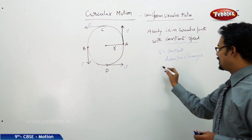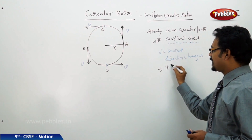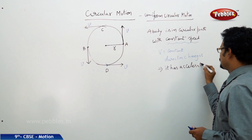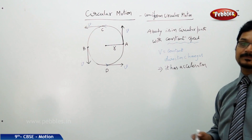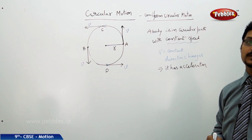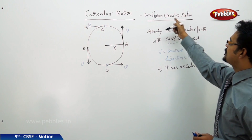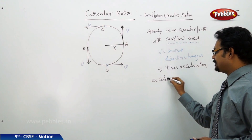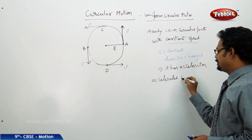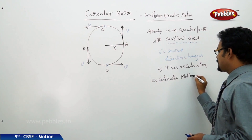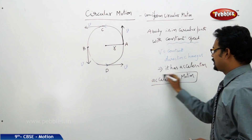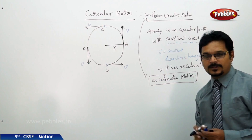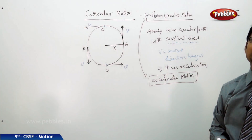Because the velocity direction is changing in uniform circular motion, the body has acceleration. So we say uniform circular motion is also accelerated motion. That means if we want to give any example of accelerated motion, circular motion can be given as an example.